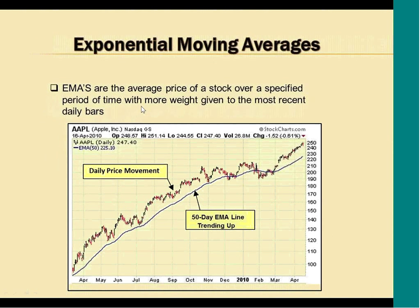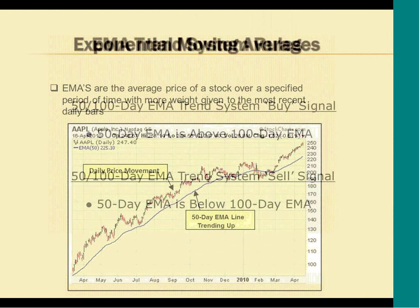I like to use exponential moving averages to measure the trend. Here I'm displaying a price chart for Apple stock showing the daily price movement with vertical lines, and this blue line is the 50-day exponential moving average. You can see at a glance that the trend for Apple stock during this time period was up. This trend has since reversed, and our trend following system exited Apple long before this big decline set up. Exponential moving averages are the average price of a stock over a specified period of time, with more weight given to the most recent daily bars.